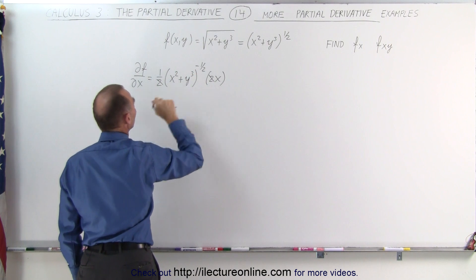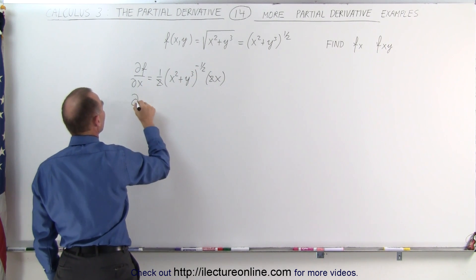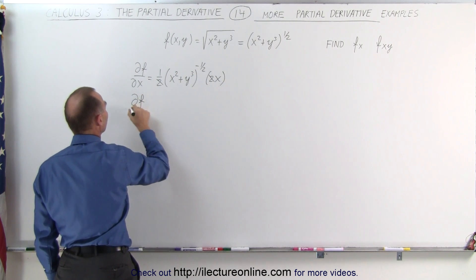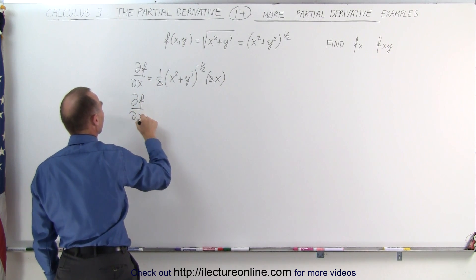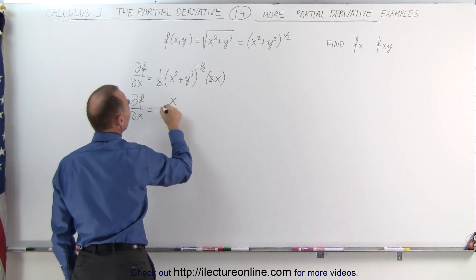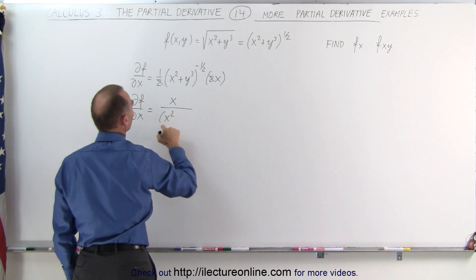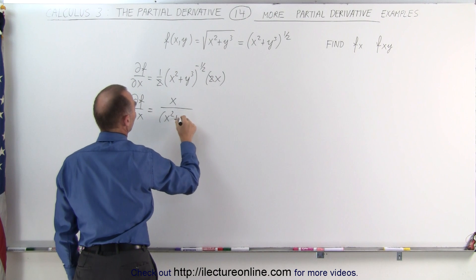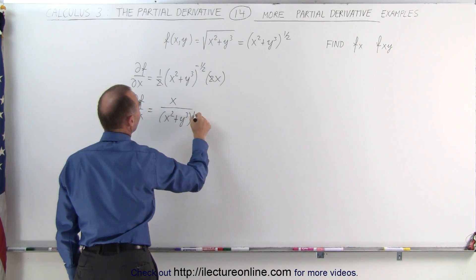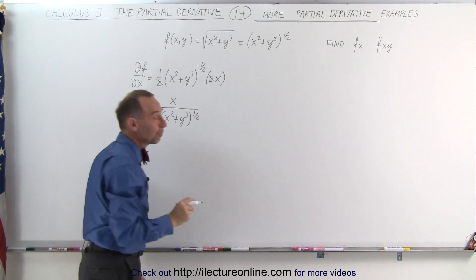Notice the 2 in the denominator cancels with the 2 in the numerator, and we can write this as a denominator. So the partial derivative of the function with respect to x equals x divided by the quantity x squared plus y cubed to the one-half power.